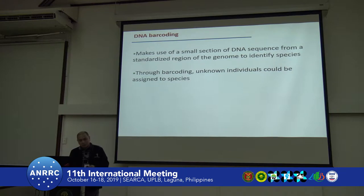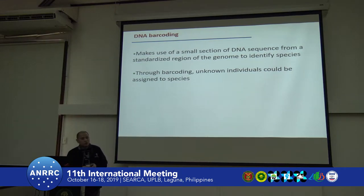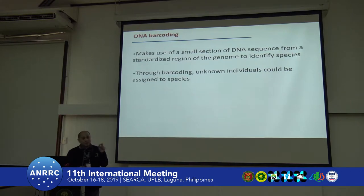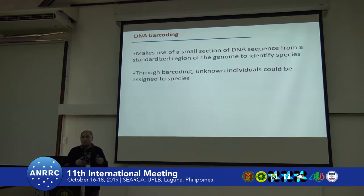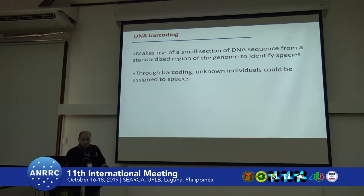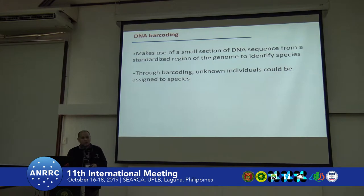We now go into DNA barcoding. What is DNA barcoding? Basically, we make use of a small section of the DNA of a particular individual. We sequence that particular gene region and then we cross-reference that against the database in order to find a perfect match or the closest match, so we could identify that unknown individual. Through DNA barcoding, unknown individuals could be named or assigned to a species.